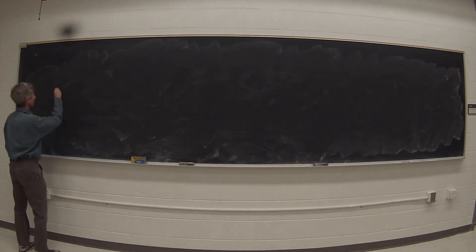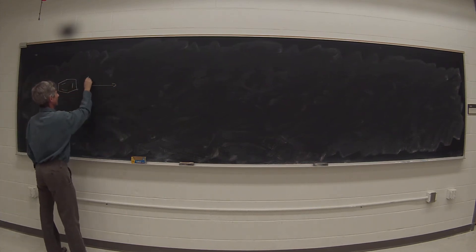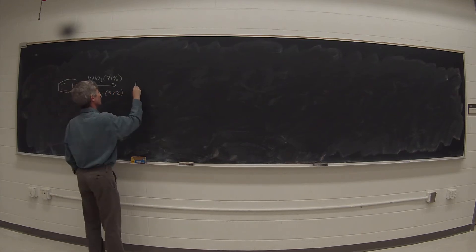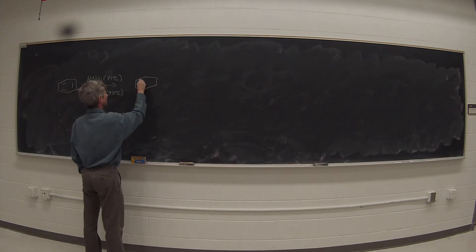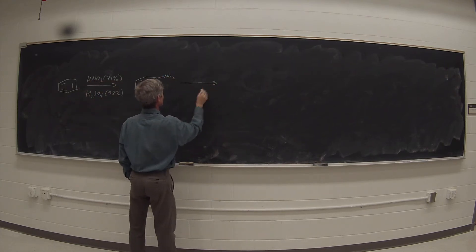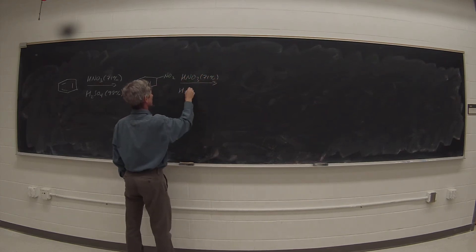So working forwards, starting from benzene, we're going to react that with HNO3 concentrated, 71%, and H2SO4 also concentrated, 98%. That's going to mononitrate the benzene, and then we're going to continue with concentrated nitric and concentrated sulfuric acid.